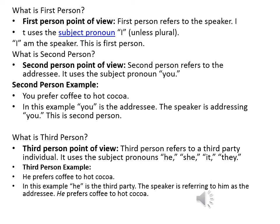First person is the point of view of the speaker. It uses the subject pronoun 'I', unless it's plural. For instance, we could say 'I am the speaker.' This is first person because you are speaking on behalf of yourself. Second person is the point of view when you address someone. For instance, the most common second person pronoun would be 'you' — for example, 'You prefer coffee or hot cocoa.' In this example, we are addressing someone, so this is the second person.